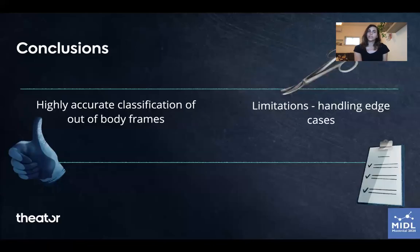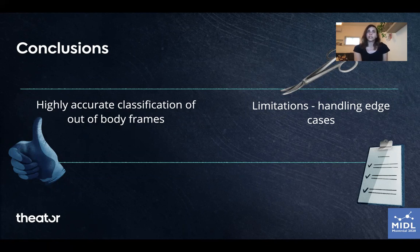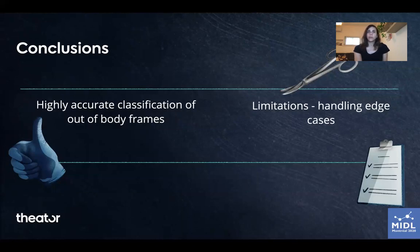In conclusion, our method demonstrated very accurate classification of out-of-body frames. Yet one of the model's limitations is dealing with edge cases when the classification is not that obvious. With further research and more data, it is possible to train even more robust and accurate models with the ability to handle unusual frames and hard examples.